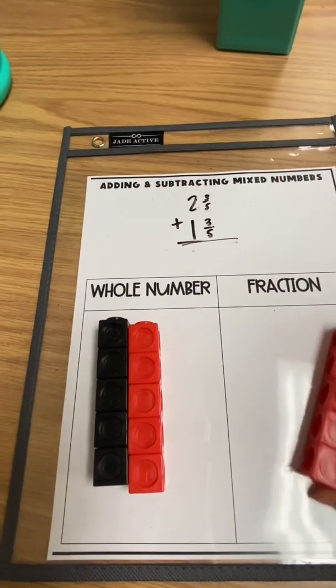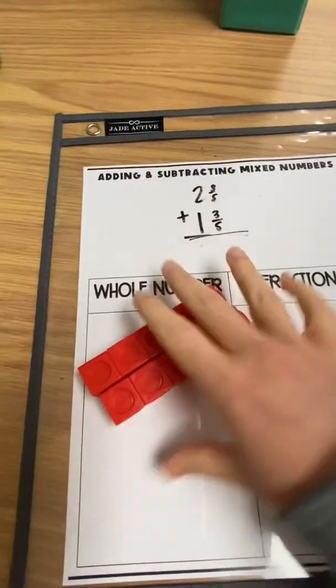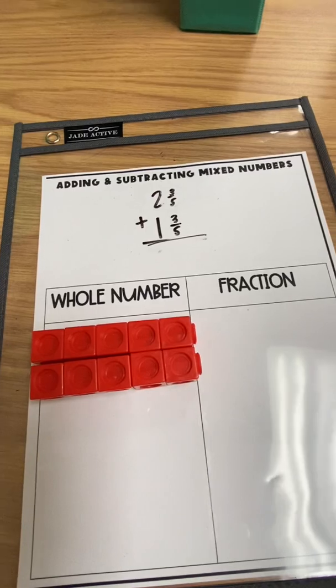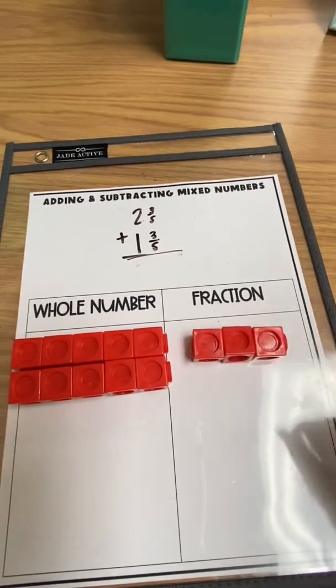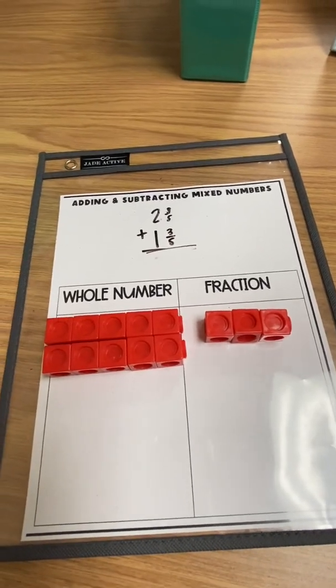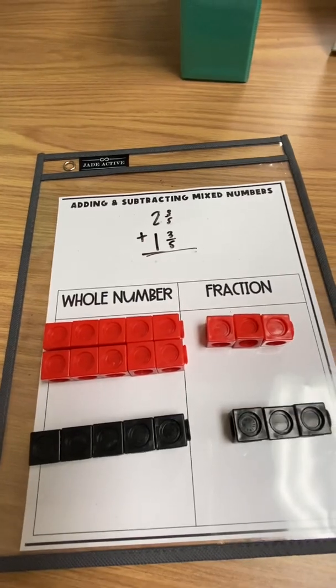So let's clear our mat. So we have two holes, again 5 5ths plus 5 5ths. And then we have 3 5ths. And then we have one hole, another 5 5ths plus 3 5ths.